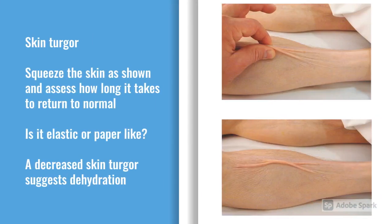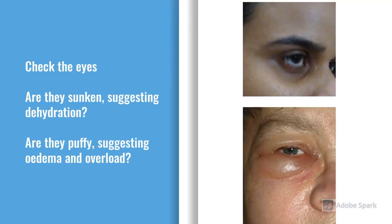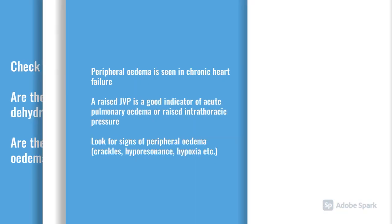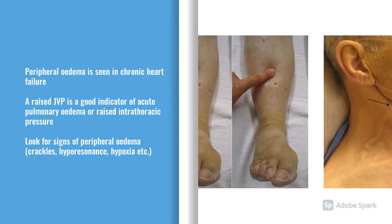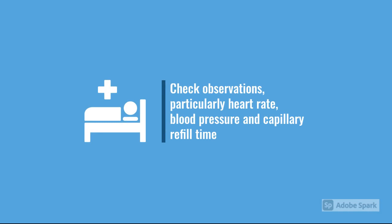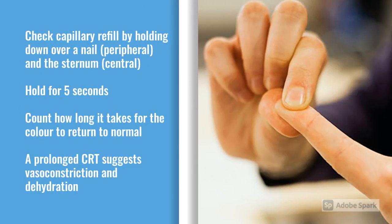You can look at their skin to see how turgid it is. If it's quite elastic and when you pinch the skin it goes back to normal quickly, they're probably hydrated; if not, they're dehydrated. Check the eyes — if they're sunken or puffy — and look for peripheral oedema, and pulmonary oedema as well. JVP: a raised JVP is suggesting hypervolaemia or some intrathoracic pathology. For central capillary refill, you need to push and hold on the sternum for at least five seconds before releasing and see how many seconds it takes for colour to return.